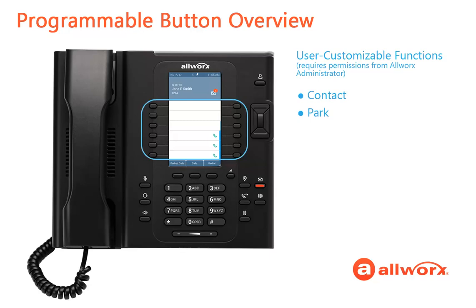Park places the active call on a system-wide hold. Redial calls the last dialed outbound call placed from the phone. Release ends the current call and accesses the current appearance to dial a new call. Flash provides an analog hook flash signal to the CO line to perform flash-related actions.